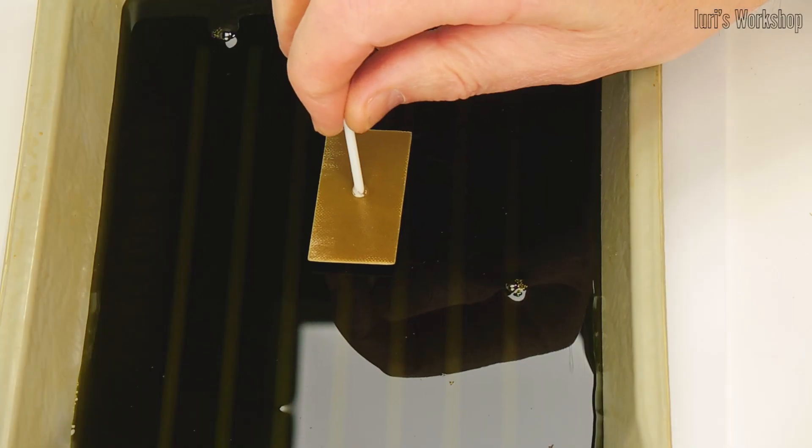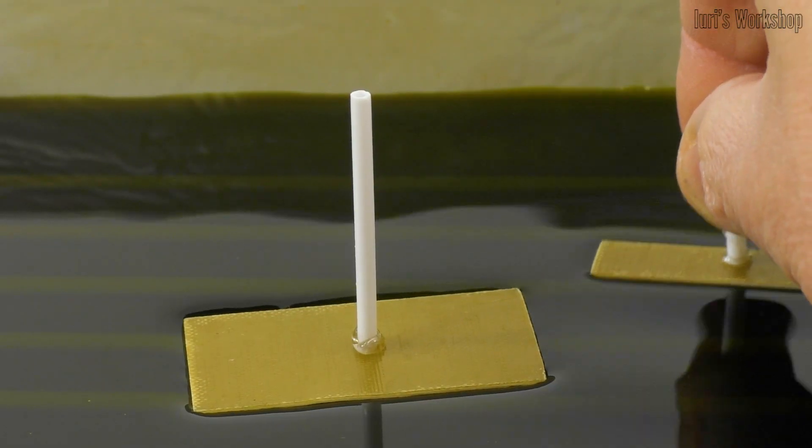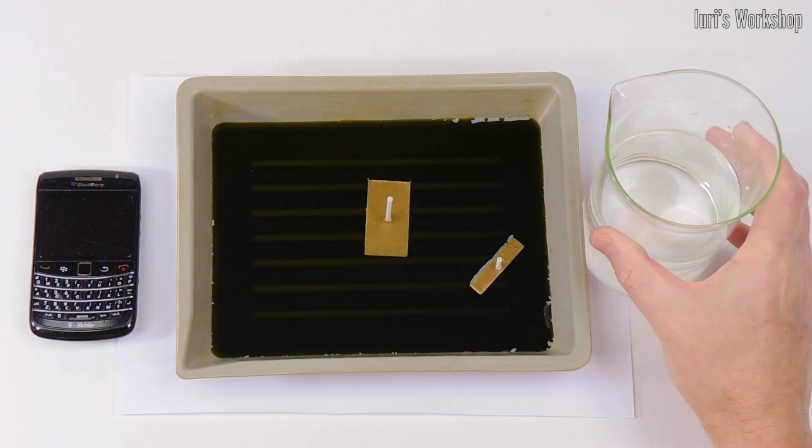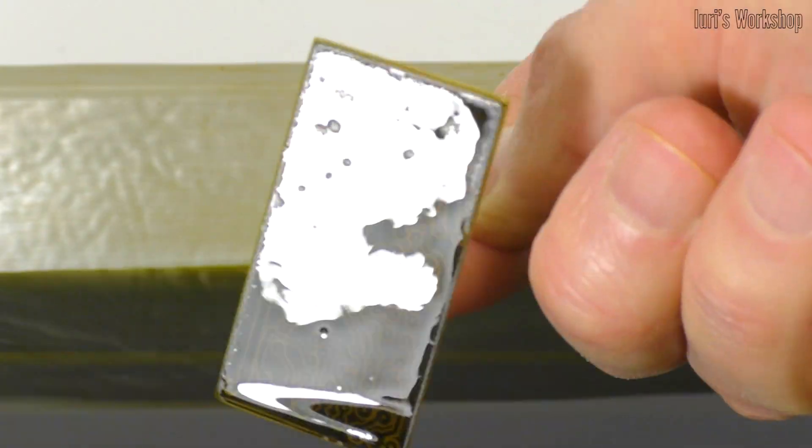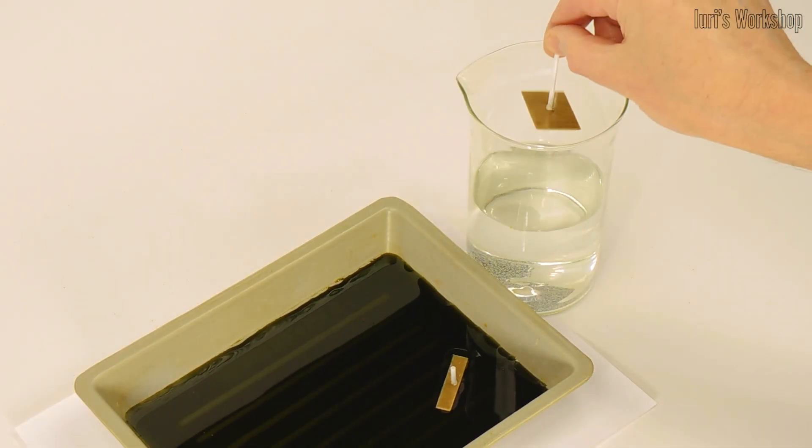I etched the PCB traces with ferric chloride solution. This process usually takes 15 to 30 minutes, depending on the concentration of the solution.